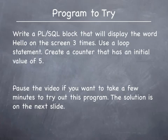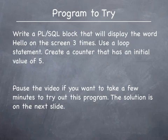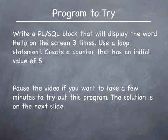On this slide is a program for you to try. You may pause the video for a few minutes and attempt the program, which is to write a PL/SQL block that will display the word hello on the screen three times using a loop statement. There is a slight difference between this program and the one explained on the previous slide. You are expected to set the variable that will behave as the counter to an initial value of 5. Think of what you must do to ensure that with an initial value of 5, the program will still display the word hello three times.